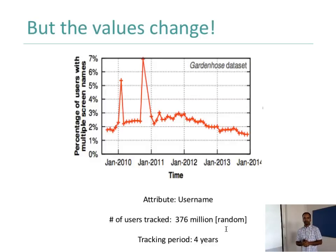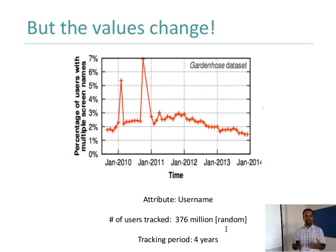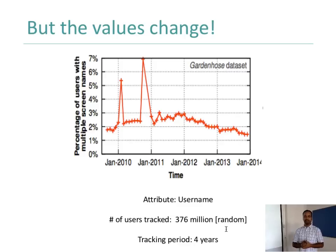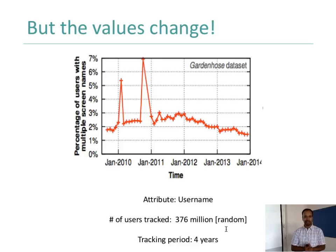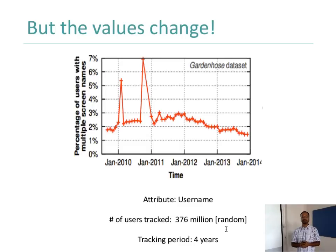This graph shows the changes that have happened in terms of just username. Some details of profiles can change over time — you don't have to look only at current details; you can look at the past. Here, 376 million users were tracked and the graph's x-axis shows the percentage of users with multiple screen names — names they have changed. In my case, currently I have Ponguru, whereas in the past I might have had Ponguru1, 2, 3, or Professor at IIIT Delhi. About 7 percent of people changed their usernames in the data collected around January 2011, with another peak around February 2010.